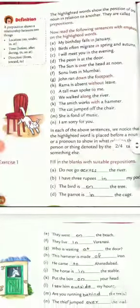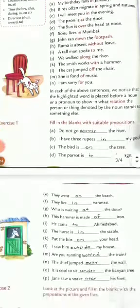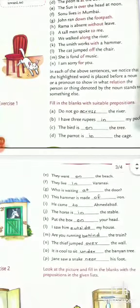Exercise 1: Fill in the blanks with suitable prepositions. Do not go across the river. I have three rupees in my pocket. The bird is on the tree. The parrot is in the cage. They went on the beach. They live in Varanasi. Who is waiting at the door? This hammer is made of iron. He came to Ahmedabad.